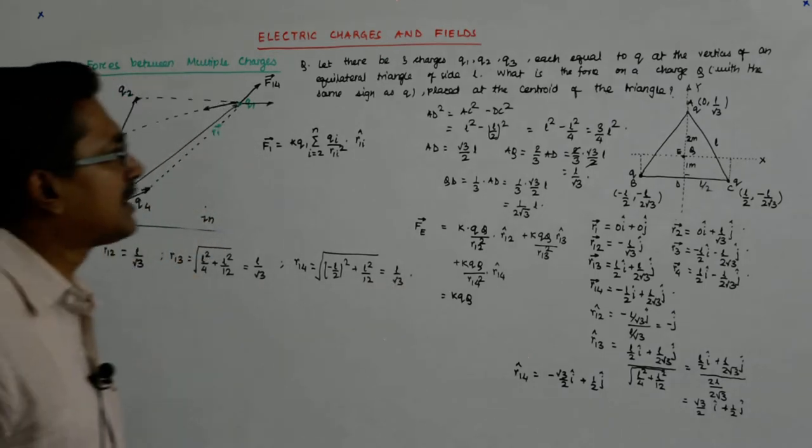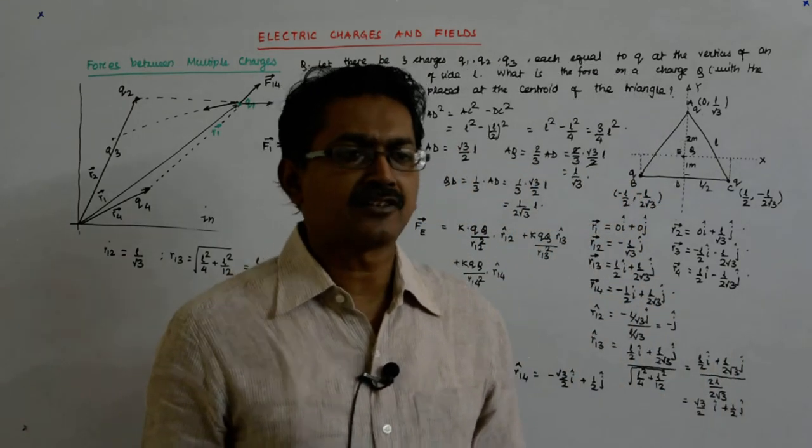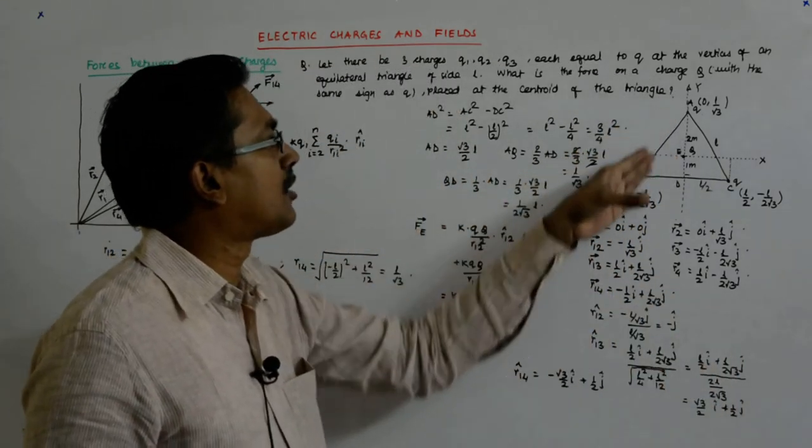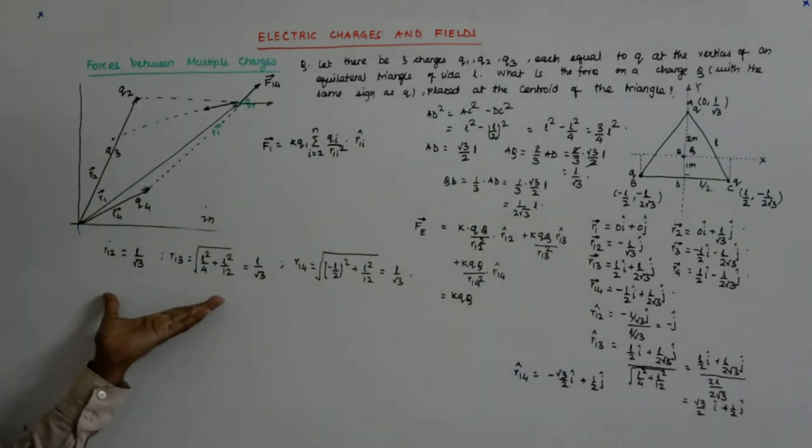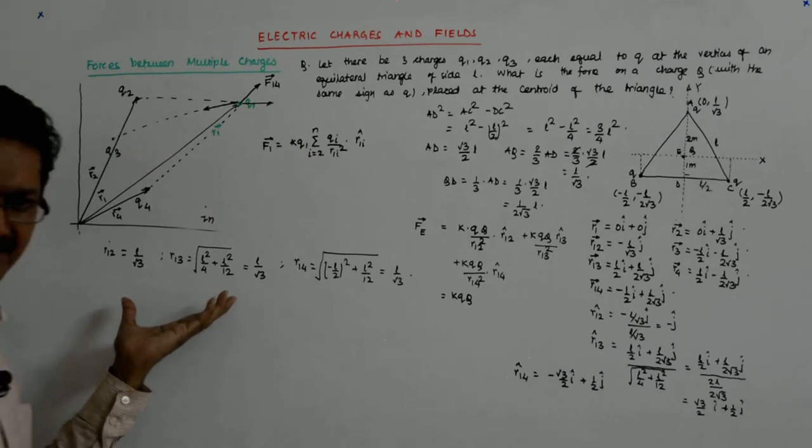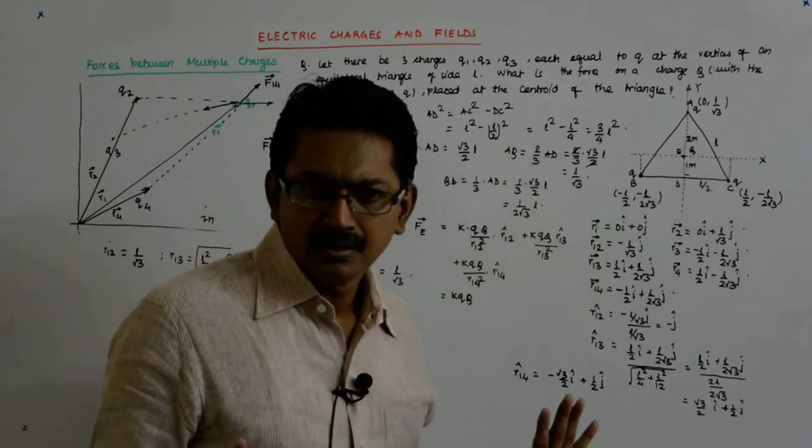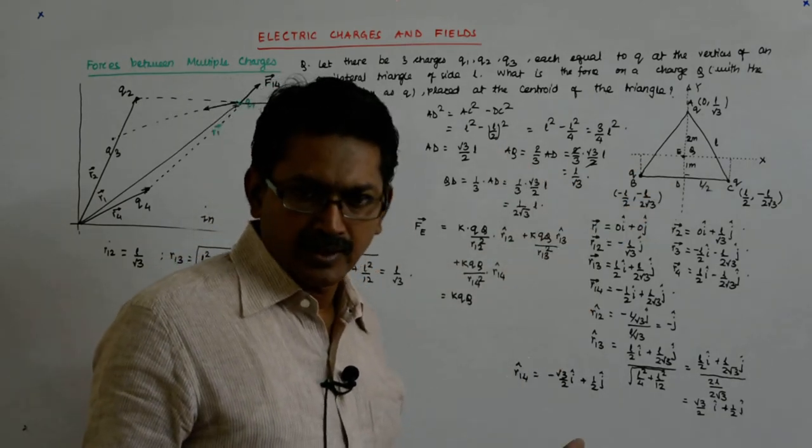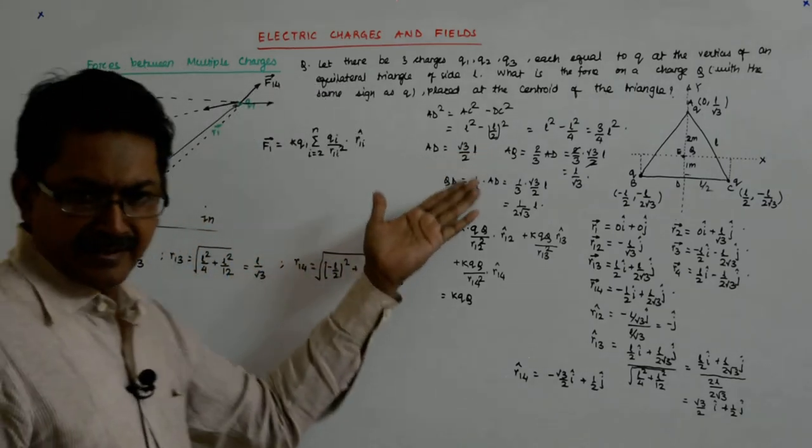Now, something that we already know, that centroid of an equilateral triangle is equidistant from all the vertices, this vector has amazingly and very correctly given me that. It has told me that yes, your R12, R13, R14, they are all the same, we know that. Okay, so that could act as a checkpoint, that whatever you are taking are correct.